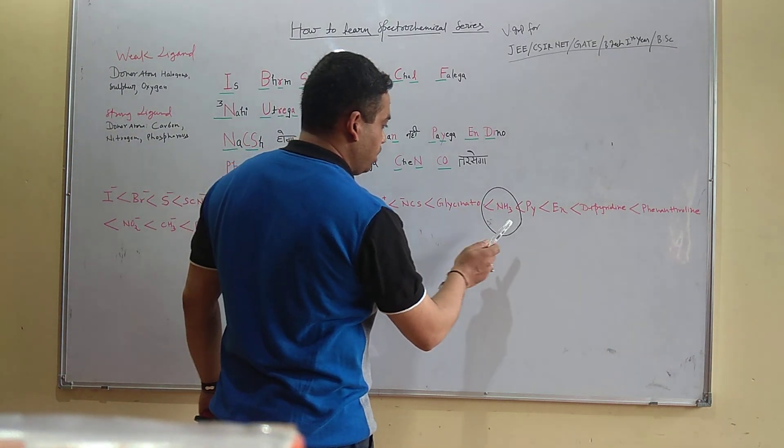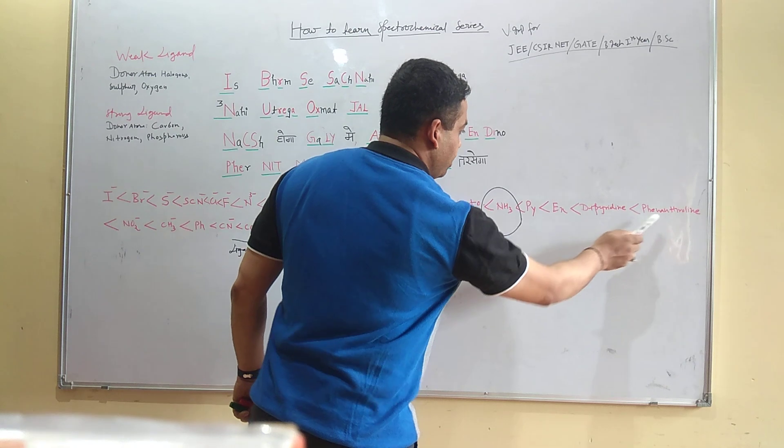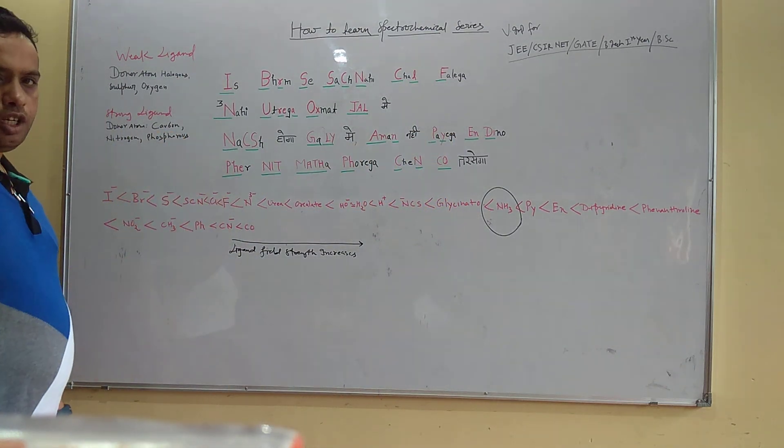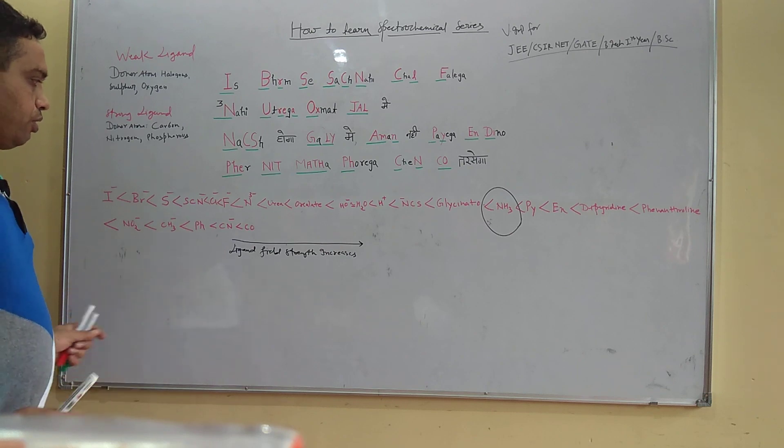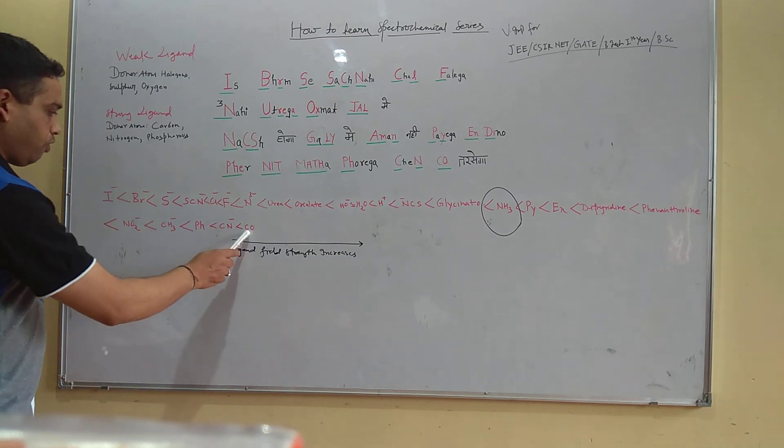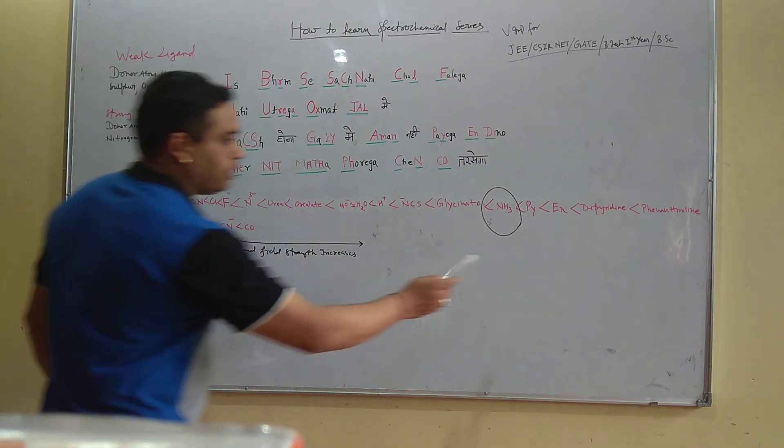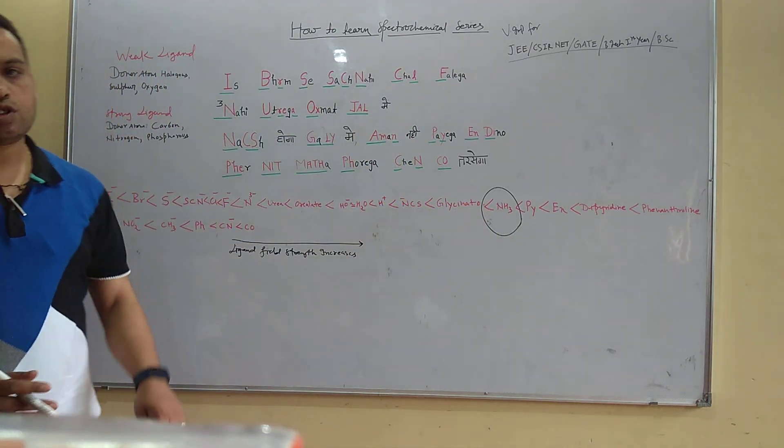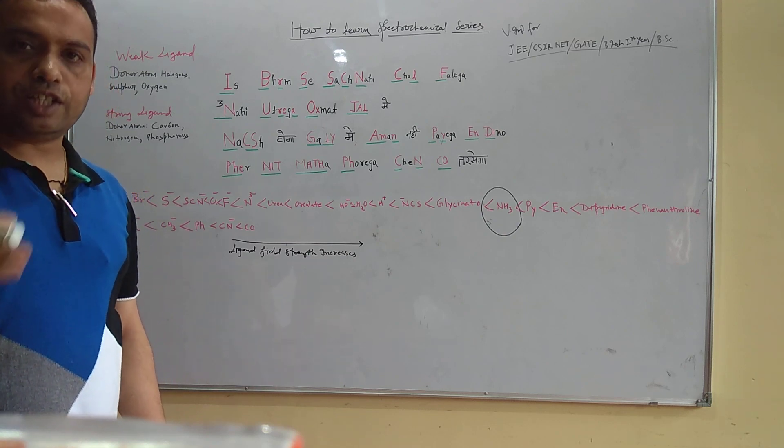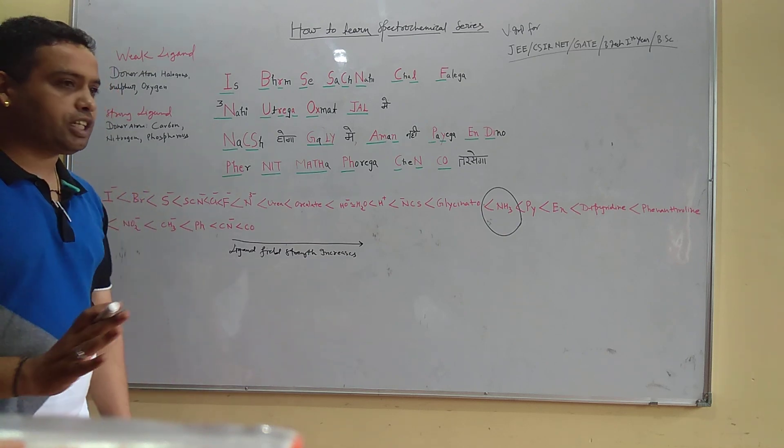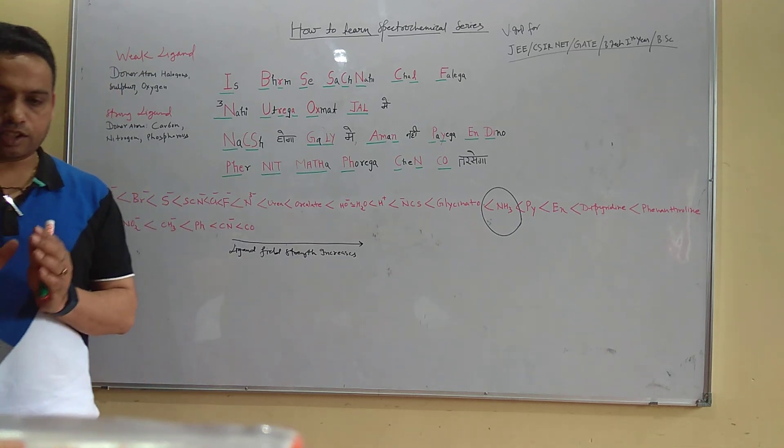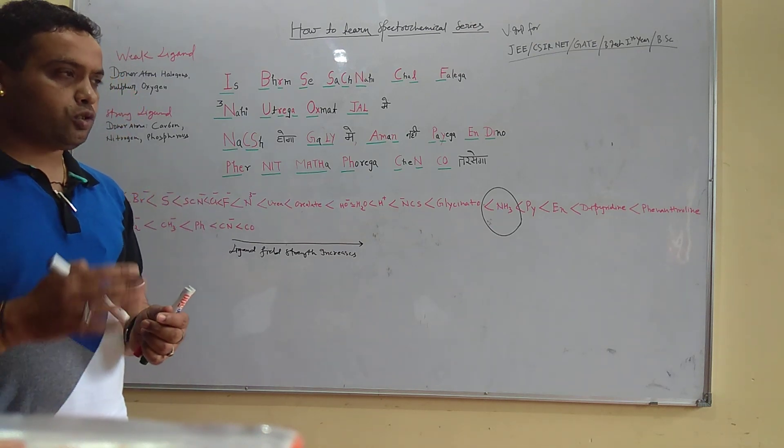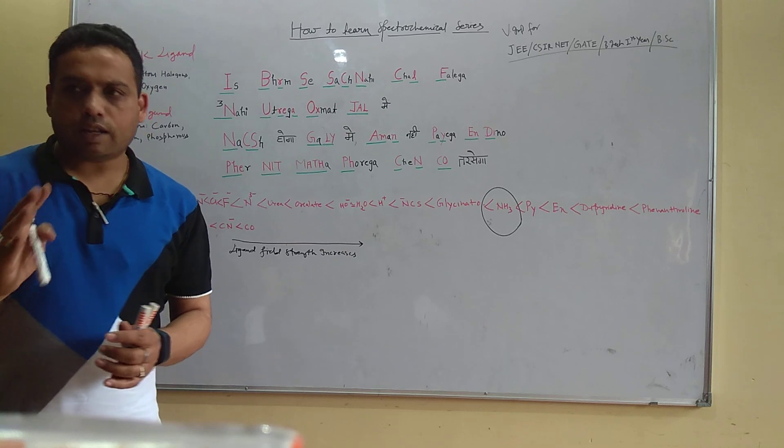However, if you count the total number of ligands in this series - 1, 2, 3, 4, 5... 24 ligands are there. And ammonia is actually more close to the strong ligand field region, but in some cases it acts as a strong ligand field and in some cases as a weak ligand field. You have to consider these things also.